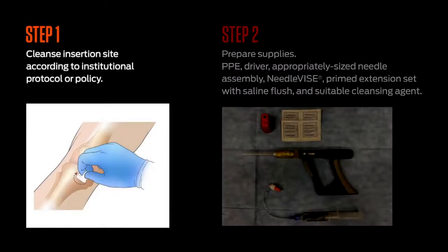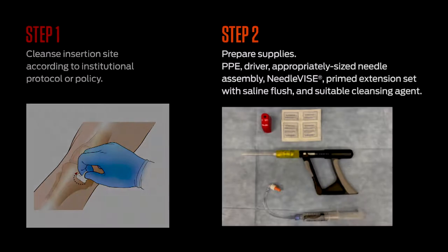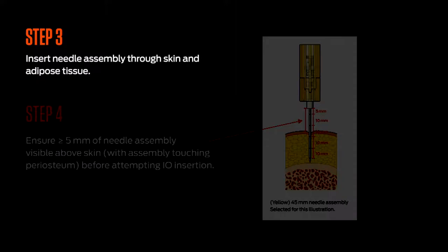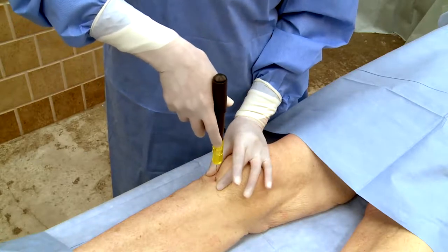Now let's discuss each insertion step in detail. Step 1: Clean the insertion site according to institutional protocol or policy. Step 2: Prepare supplies — don PPE, prime your infusion set, and attach the needle assembly to the driver. It's important not to touch or contaminate the uncapped sterile components of the needle assembly. It's also important to control any patient movement prior to or during the procedure. Step 3: Insert the needle assembly through the skin and adipose tissue. Needle assembly selection is based upon overlying tissue depth at the insertion site.